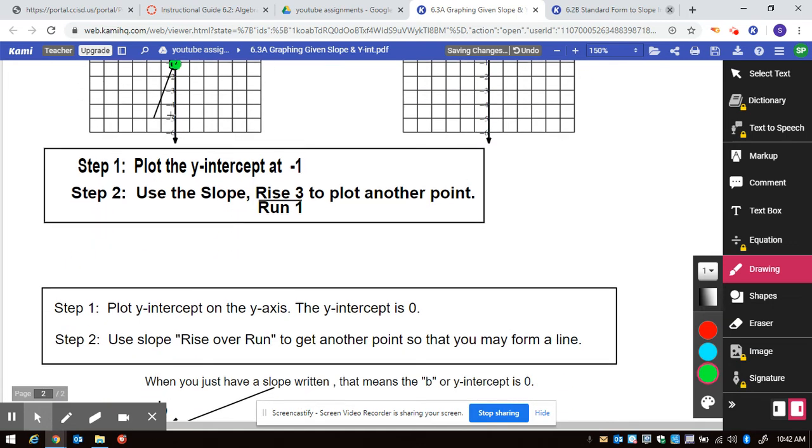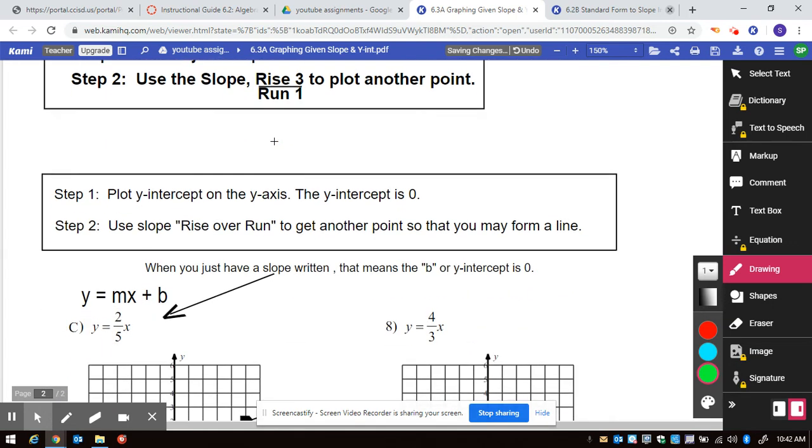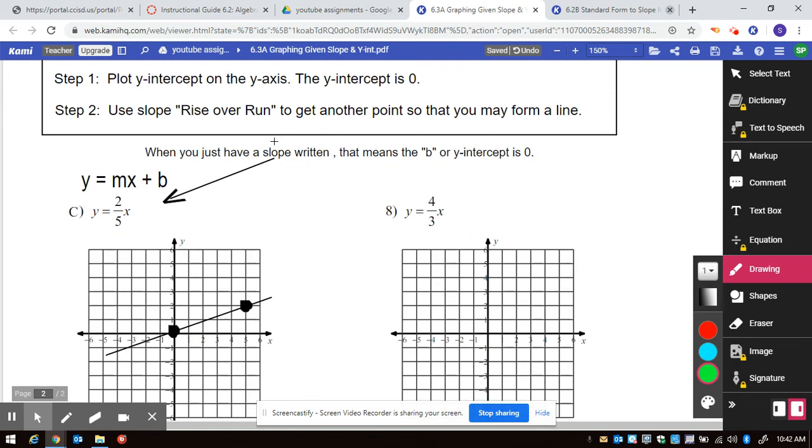And then for the final example, it is reminding us that if you do not have plus or minus some number that the actual b value is zero.